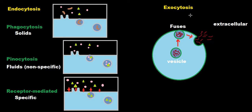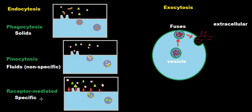For endocytosis, there are three types: phagocytosis, which involves large solids; pinocytosis, which involves non-specific fluids; and receptor-mediated endocytosis, which is specific to certain particular molecules.